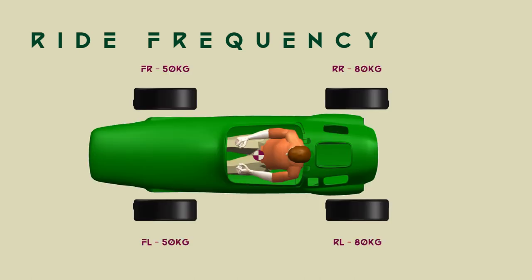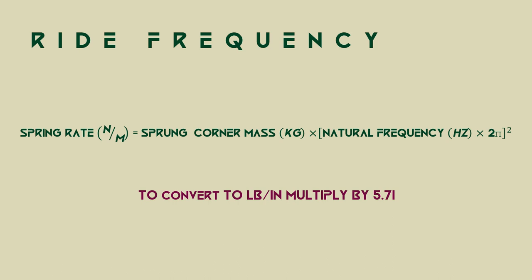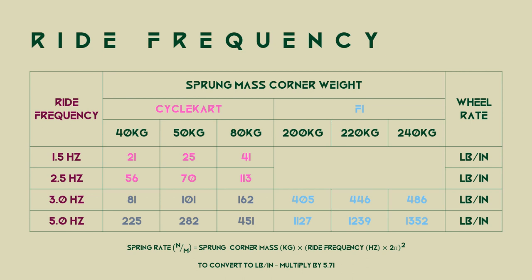To convert from frequency to spring rate, we need the sprung mass at each corner. The equation is: spring rate = sprung corner mass × (natural frequency × 2π)². Multiply by 5.71 to convert to pounds per inch. A cycle cart has corner weights around 40–70 kg and should be in the 1.5–2.5 Hz range, giving wheel rates of roughly 20–110 lb/in. An F1 car at 200–240 kg corner weight and 3–5 Hz lands between 400–1300 lb/in. Keep these numbers in mind for later.